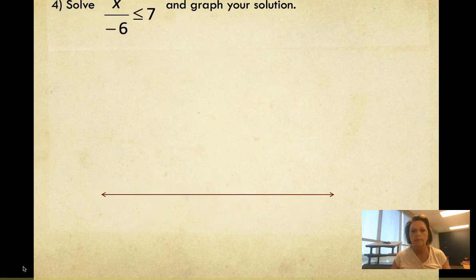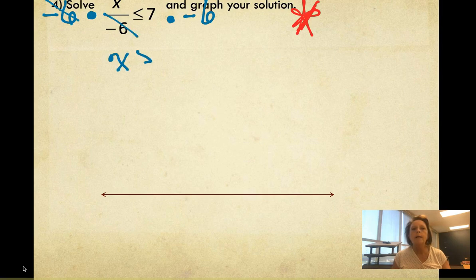Let's try another one. This says x divided by negative 6 less than or equal to 7. To solve this one, to get x by itself, I'm going to do the inverse of dividing, which is multiplication. So I'm going to multiply both sides by negative 6.